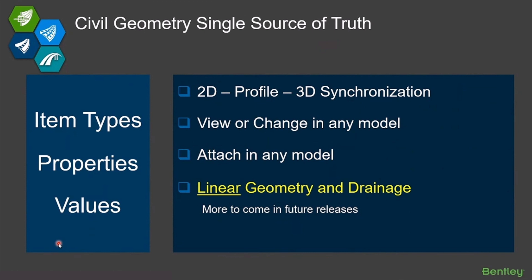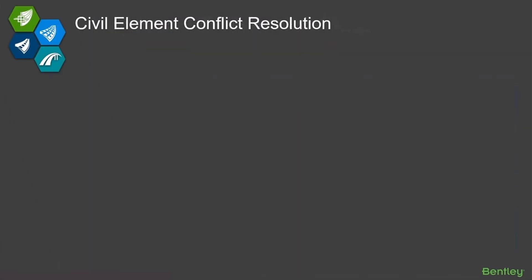This is implemented for linear geometry and drainage elements; there is more coming — for example, point elements. This has not been implemented yet; we're still working on it for point elements. Today you can actually get separate item types on your 2D and your 3D point, so be careful of that because you could have conflicting data.